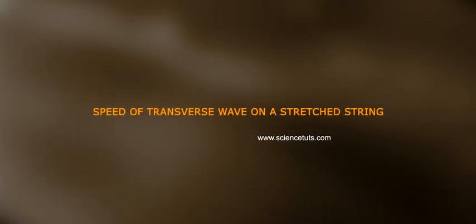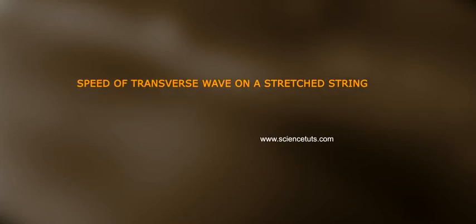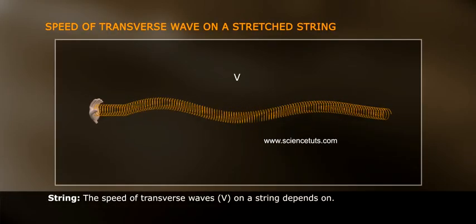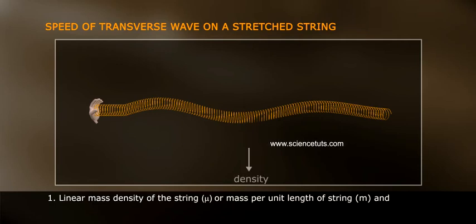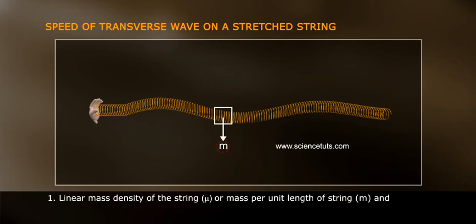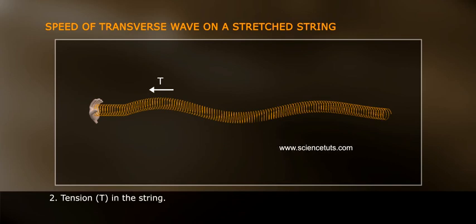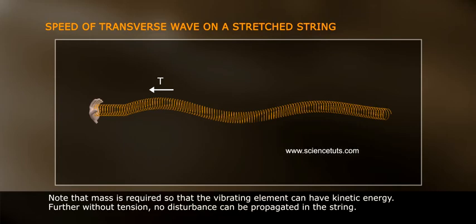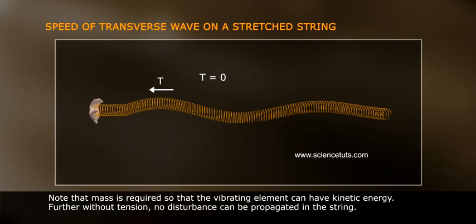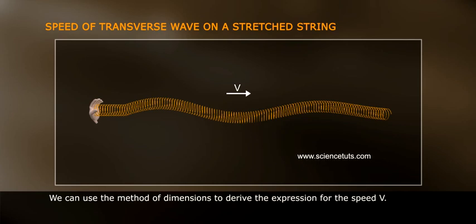Speed of transverse wave on a stretched string. The speed of a transverse wave v on a string depends on: (1) linear mass density of the string μ, i.e., mass per unit length of the string, and (2) tension T in the string. Note that mass is required so that the vibrating element can have kinetic energy. Further, without tension, no disturbance can be propagated in the string. We can use the method of dimensions to derive the expression for the speed v.